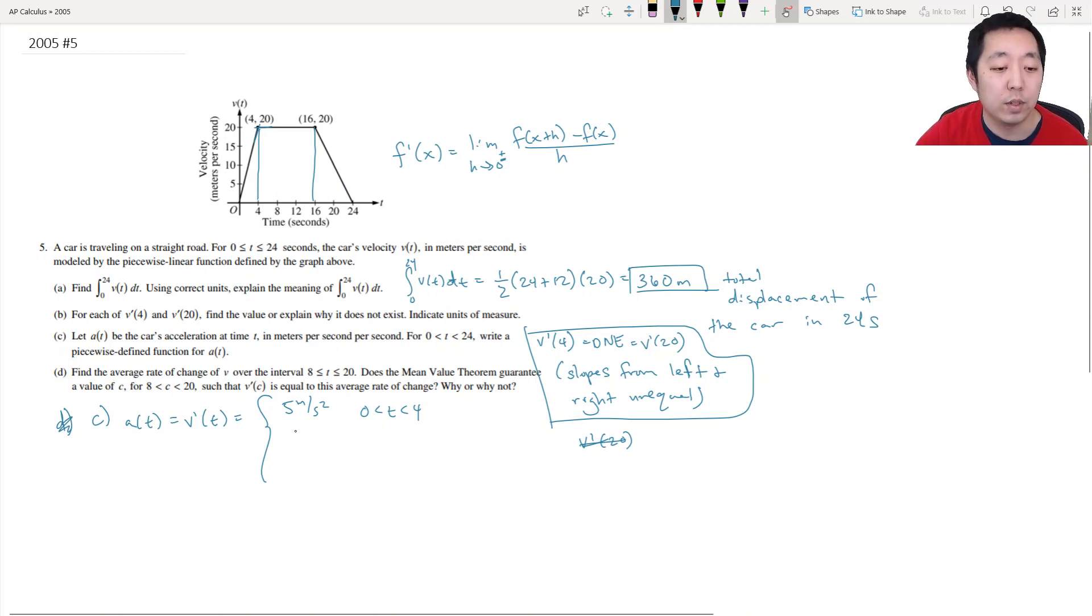Over this time interval, it has no change in its acceleration because it's a flat line—the slope is 0. And that's between 4 less than t is less than 16. And then here has negative slope. It goes down 20 over 8 seconds, so minus 20 over 8, or minus 5 halves meters per second squared. And that's 16 less than t is less than 20. Now none of these have equal, and that's important because we said at the equal it does not exist.